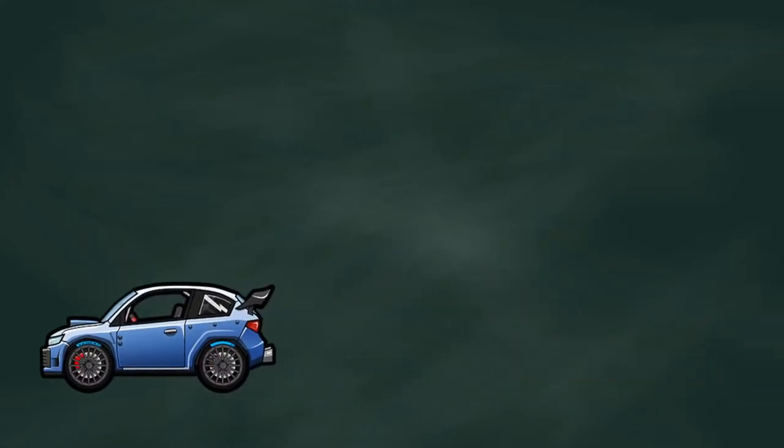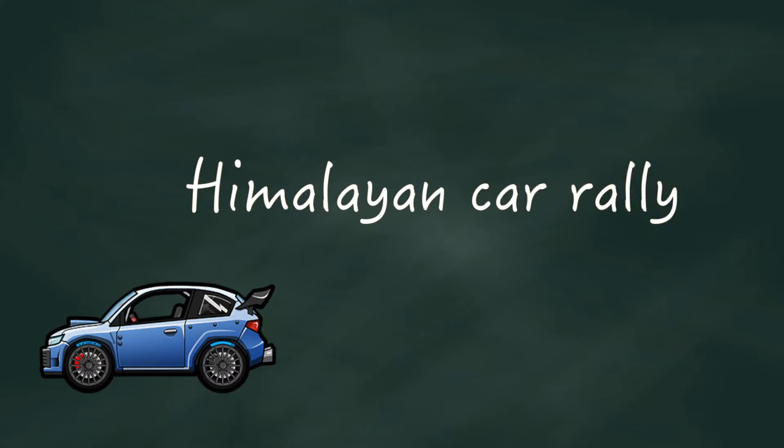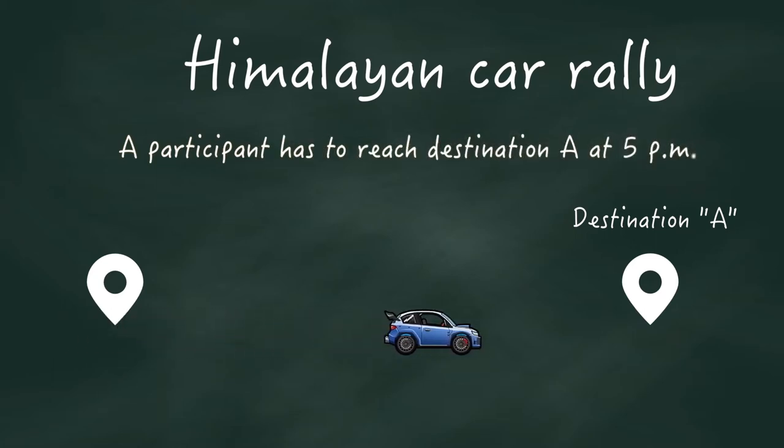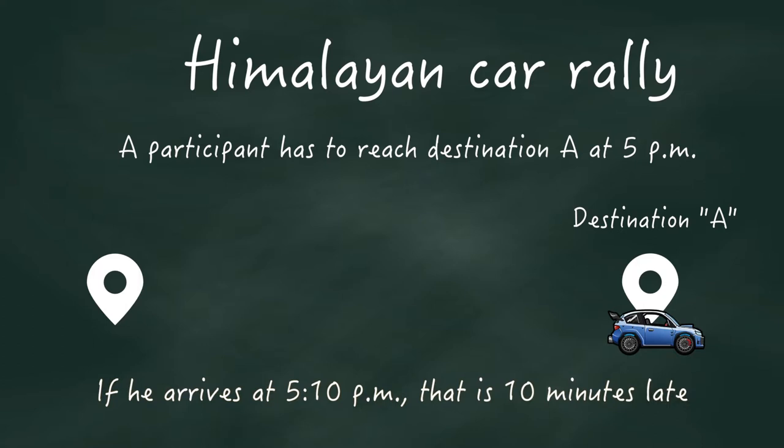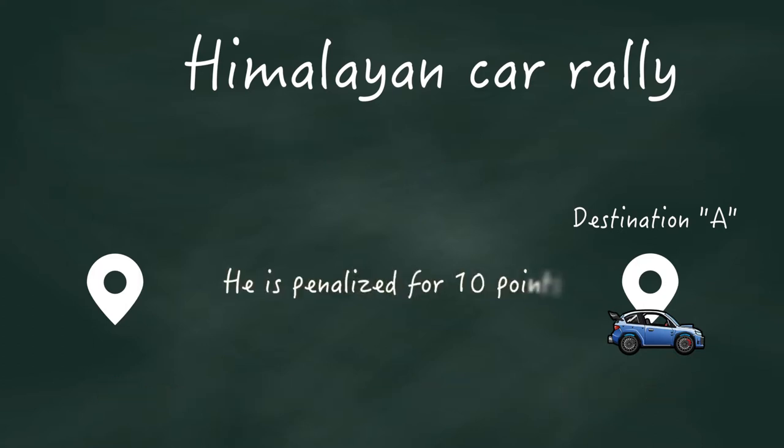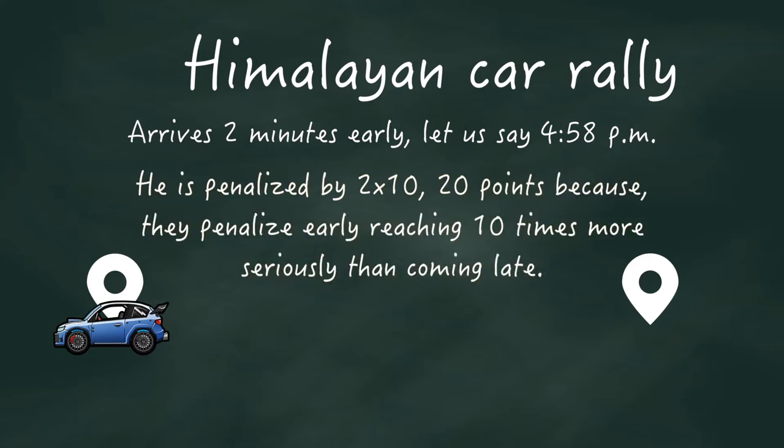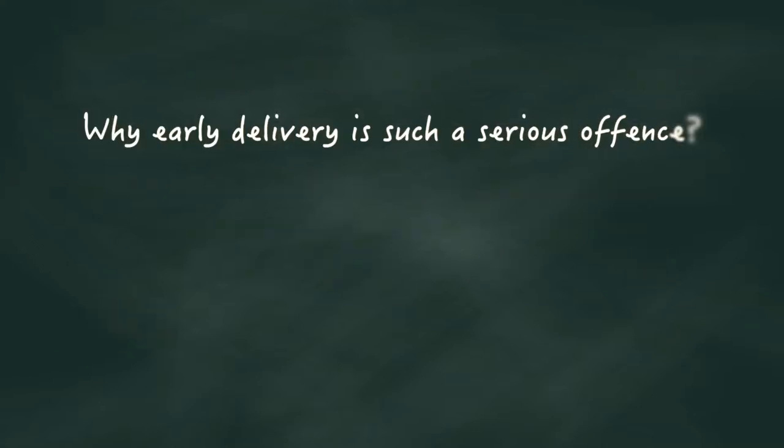Consider a car rally, let's say a Himalayan car rally. How do you think the participants are rated? Let us assume a participant has to reach destination A at 5 PM. If he arrives at 10 PM, that's 10 minutes late, he is penalized for 10 points. But if he arrives 2 minutes early, let us say 4:58, he is penalized by 2 into 10, 20 points. Because they penalize early reaching 10 times more seriously than coming late. Can you see why early delivery is such a serious offense?